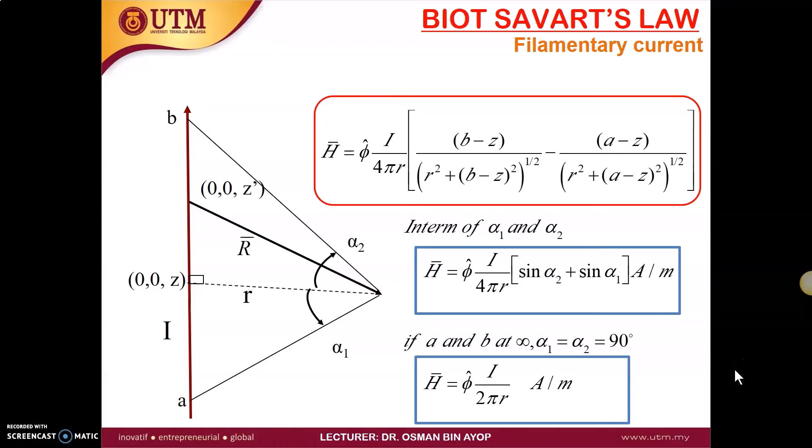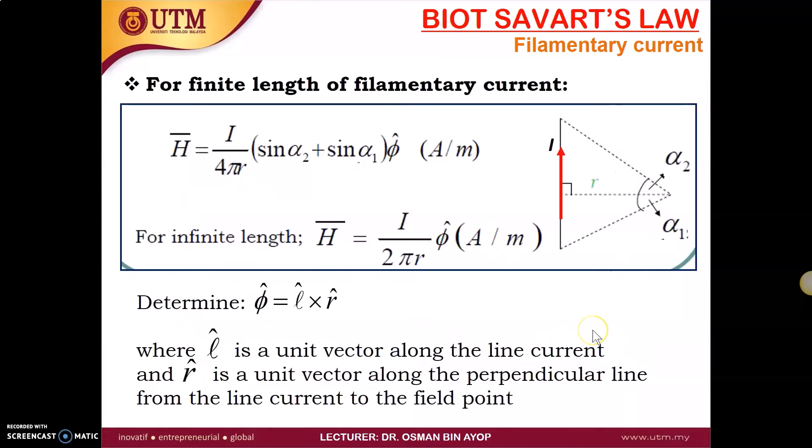Alright, from the analysis you can see the relationship between the Biot-Savart law and also Coulomb's law. The analysis is almost similar if you still remember. So this is a conclusion from the Biot-Savart law for the filamentary current elements. And this is for the finite lengths and also the infinite. So for the finite, the alpha 1 and alpha 2 become 90 degrees. So sin alpha 1 plus sin alpha 2 become 2.